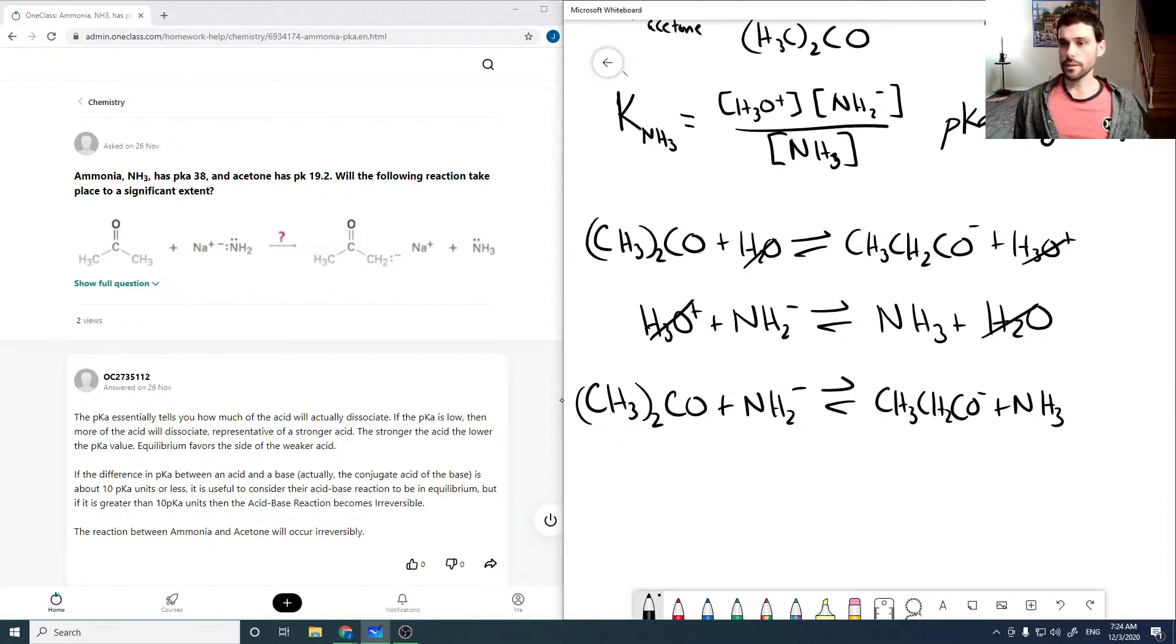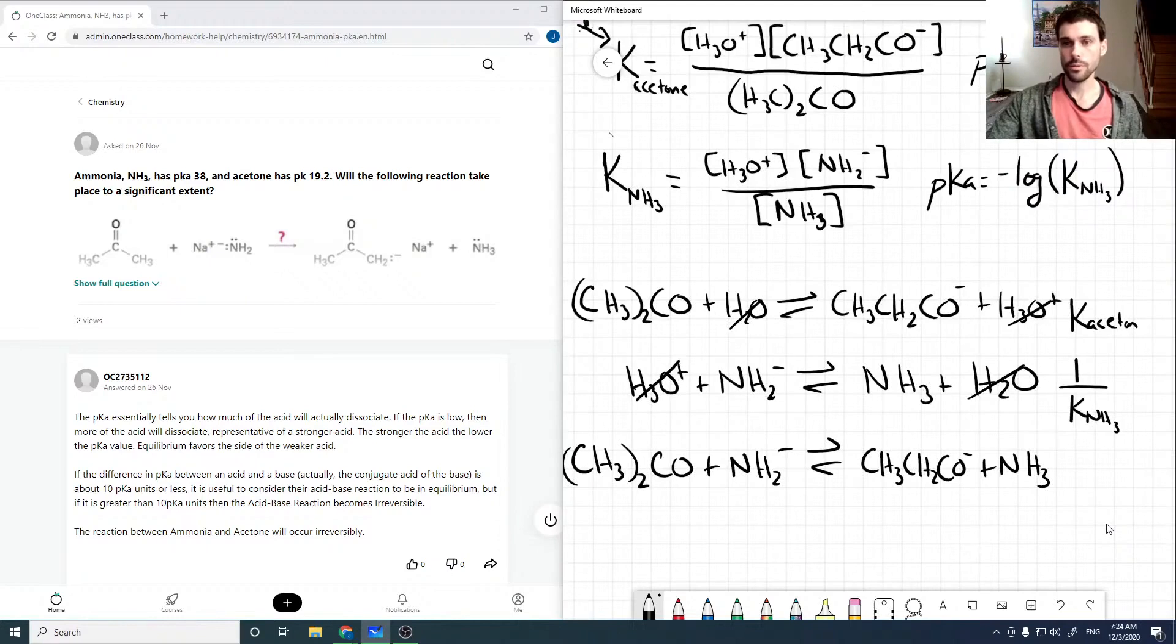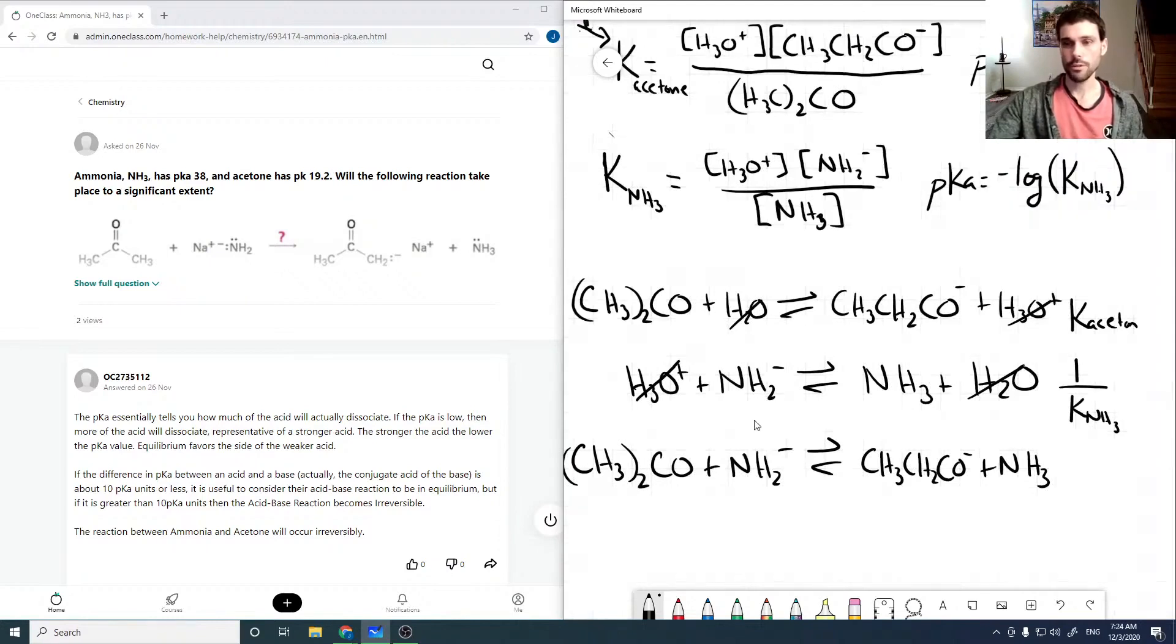Now, we had the K constant for this guy. The K for this will actually be 1 over the K for NH3. Now we'd be tempted to use KB as NH2 minus is the conjugate base of NH3, but remember that the KB value is for the reaction of NH2 minus with water to form OH minus. It isn't the reverse reaction, which is what this is.